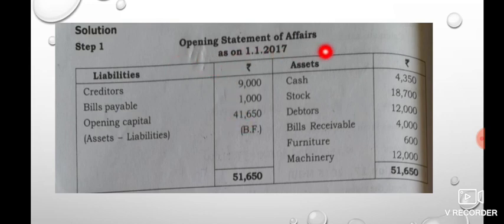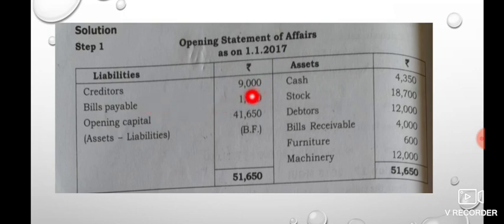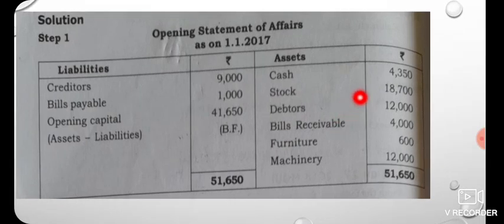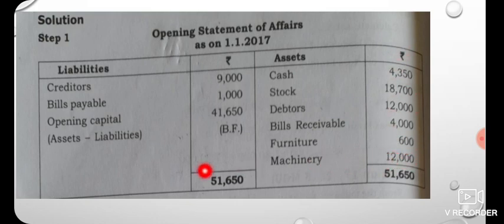The opening statement of affairs is dated 1st January 2018. Liabilities: creditors is 9,000; bills payable is 1,000. Assets: cash is 4,300; stock is 18,700; debtors is 12,000; bills receivable is 400; furniture is 600; machinery is 12,000. From these totals, we can calculate the opening capital.